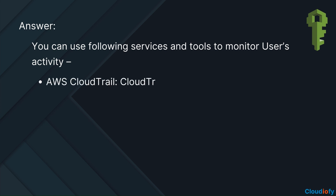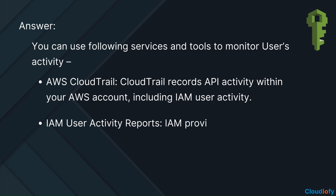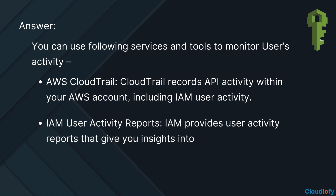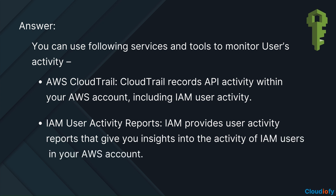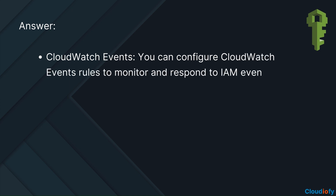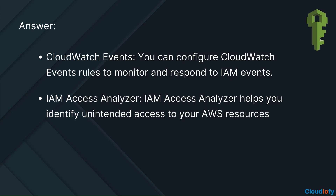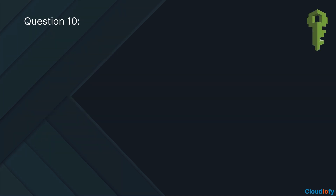AWS CloudTrail — records API activity within your AWS account, including IAM user activity. IAM user activity reports — IAM provides user activity reports that give you insights into the activity of IAM users in your AWS account. CloudWatch Events — you can configure CloudWatch Events rules to monitor and respond to IAM events. IAM Access Analyzer — helps you identify unintended access to your AWS resources.